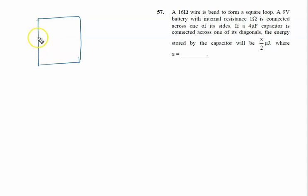You can see like this. This is 4 ohm, this is 4 ohm, this is 4 ohm and this is 4 ohm. We write here 4 ohm, 4 ohm, 4 ohm and 4 ohm.